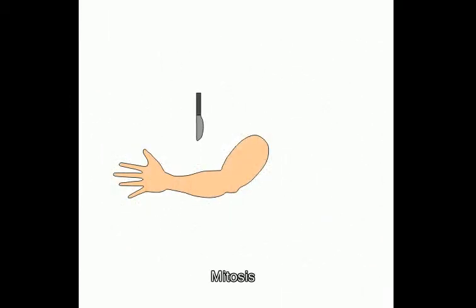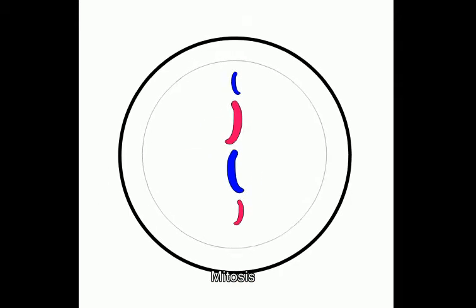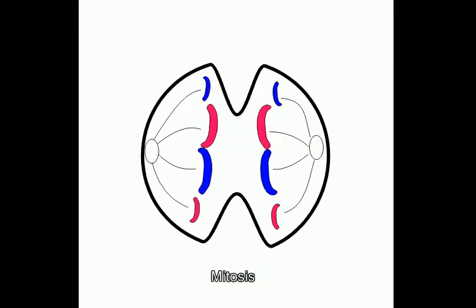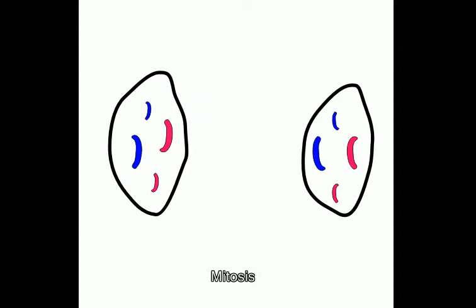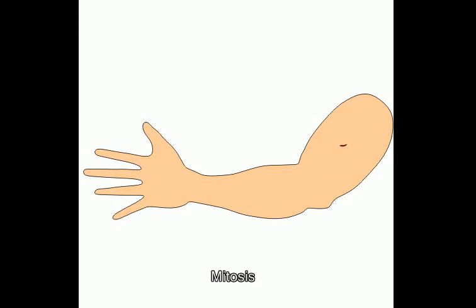Mitosis is the repairing of cells. For example, if you get a cut on your arm, mitosis will repair it. The cell membrane dissolves and the chromosomes duplicate themselves. The cell then splits into two daughter cells, which contain the same amount of chromosomes as the parent cell. The cell membrane appears in both cells. As a result of mitosis, your arm is repaired.